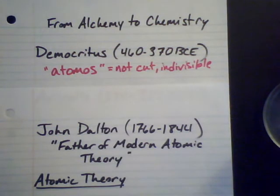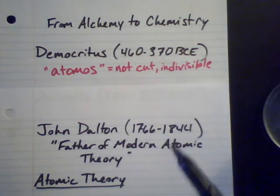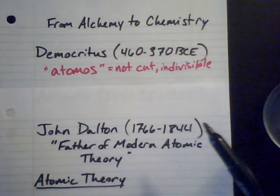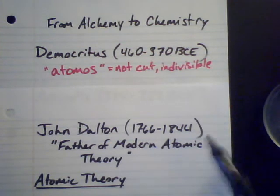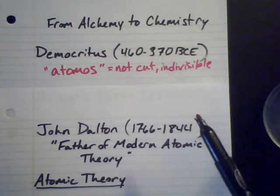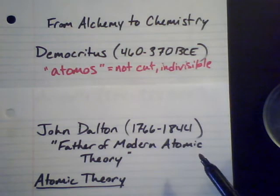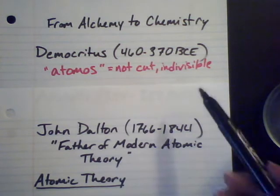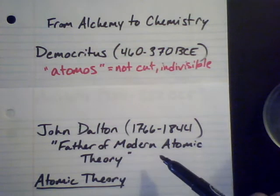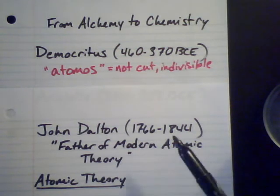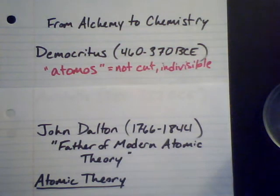That's what Democritus thought — a little bit different than the way that we think about them now. We'll talk about how that evolved in the course of this quarter. Now, the one who really derailed science — derailed chemistry — was Aristotle. And we'll get back to John Dalton here.